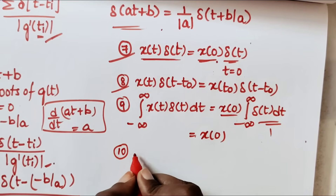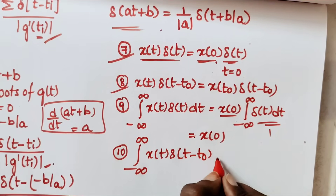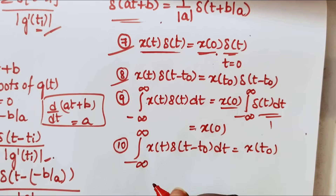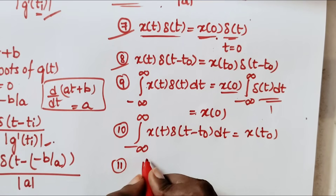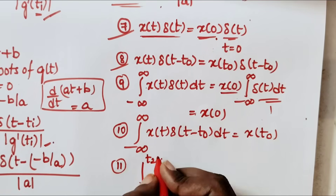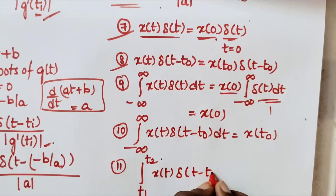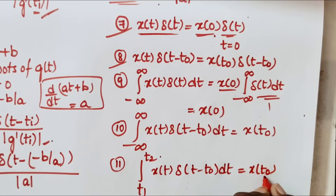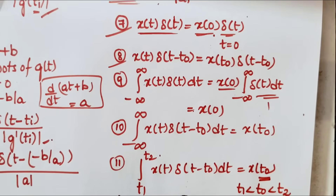And the tenth property: the integral from minus infinity to infinity of x(t) · δ(t − t₀) dt equals x(t₀). But if we take the limits from t1 to t2, then the integral from t1 to t2 of x(t) · δ(t − t₀) dt equals x(t₀) only when t₀ lies between the limits t1 and t2. So these are the most important properties of the impulse signal.